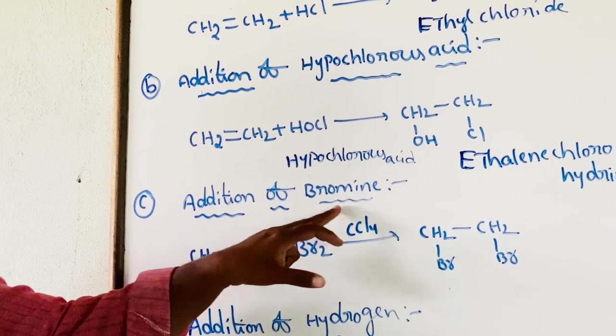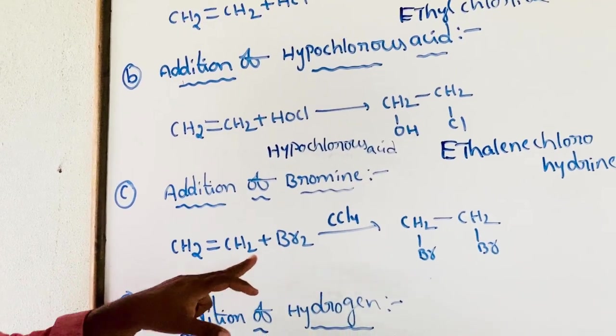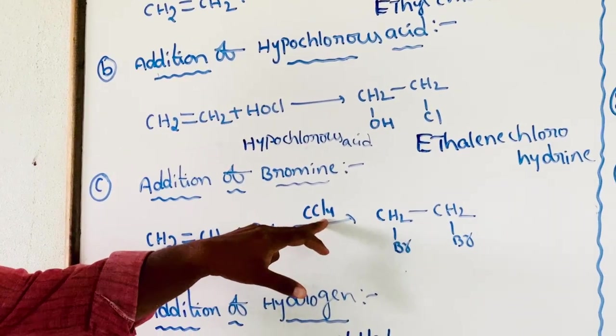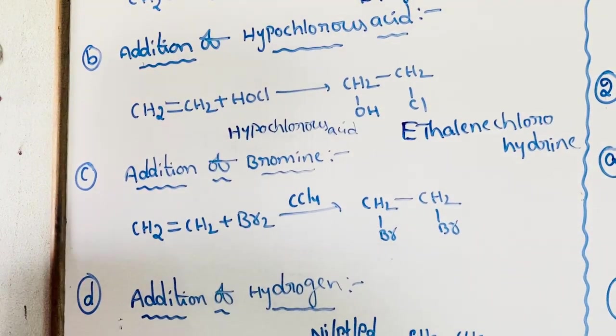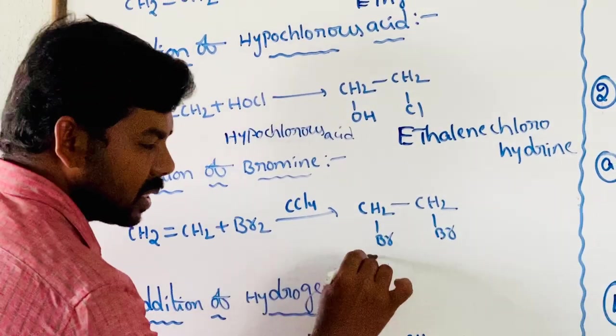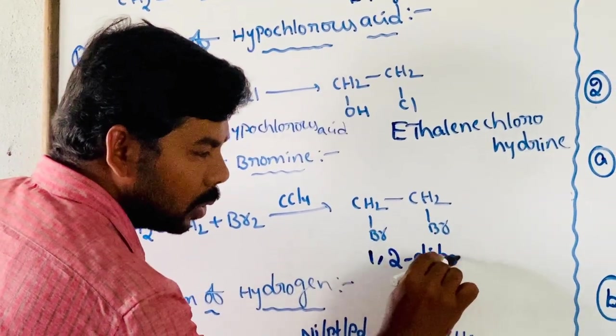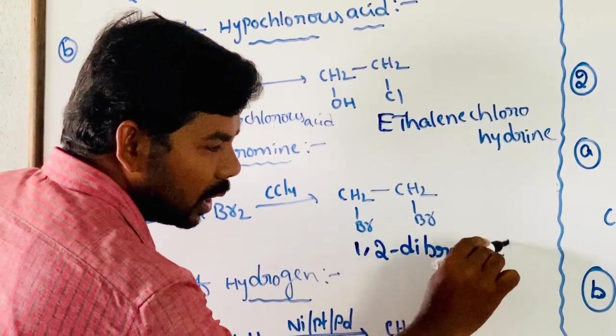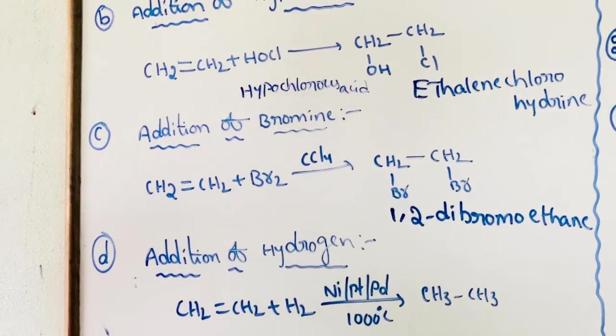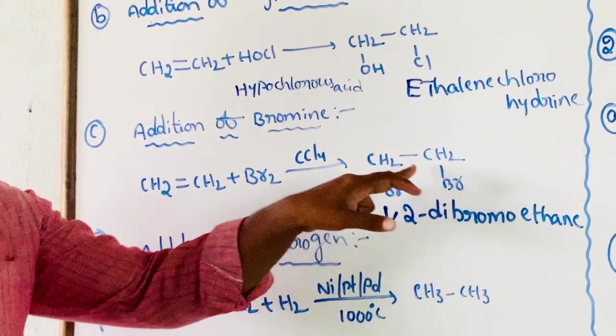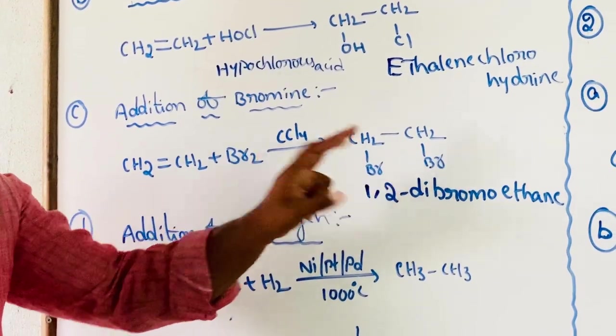Next, addition of bromine. Ethene reacts with bromine in the presence of carbon tetrachloride to give 1,2-dibromoethane. This is a vicinal dihalide. Two halogen atoms are on adjacent carbon atoms, so it's called a vicinal dihalide.